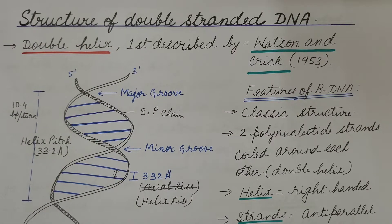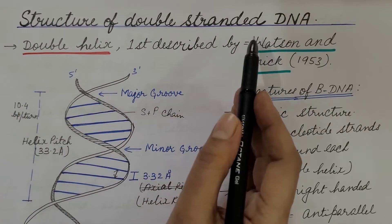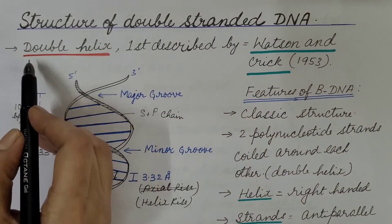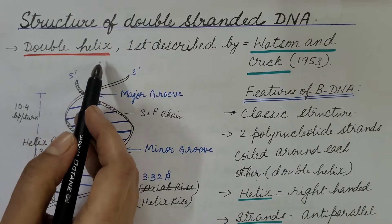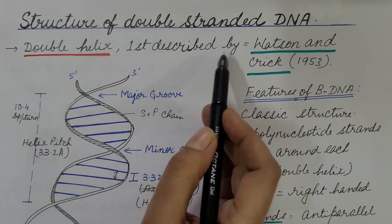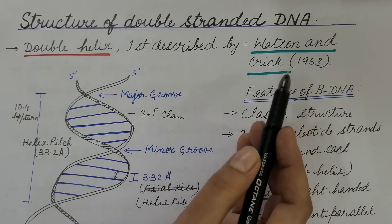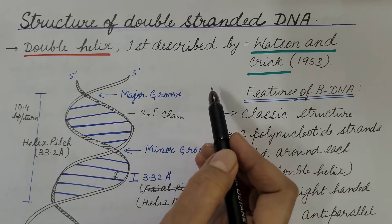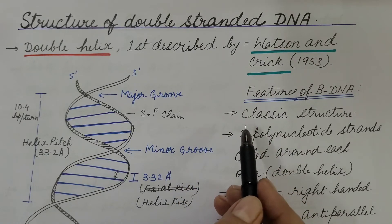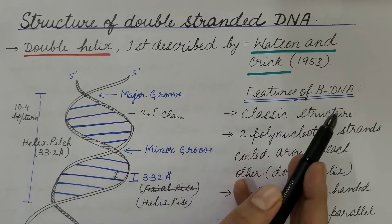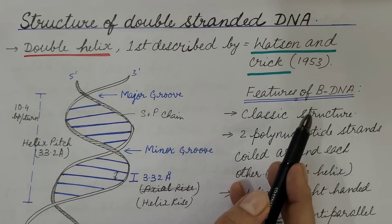In this video we are going to discuss the structure of double-stranded DNA. The three-dimensional structure of double-stranded DNA is a double helix, which was first described by Watson and Crick in 1953. Hence it is known as the Watson and Crick model. Here we will discuss about B-DNA and its features.